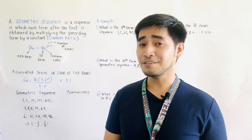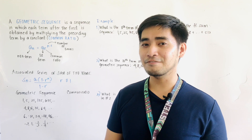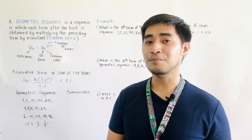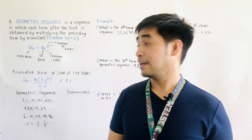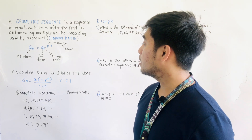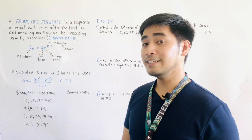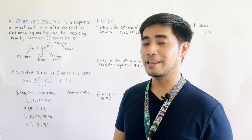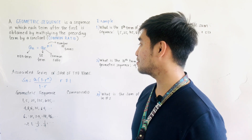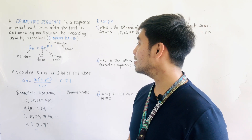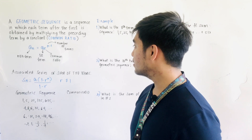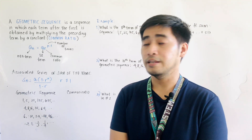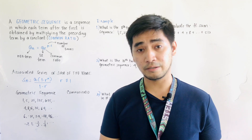Just like the arithmetic sequence, we have a formula in which we could get the term position. The formula is: AN is equal to A1 times R raised to N minus 1. Where A1 is the first term, R is the common ratio, N is the number of terms, and AN is the nth term.